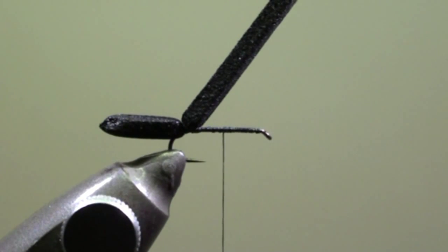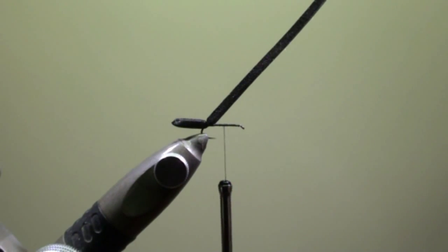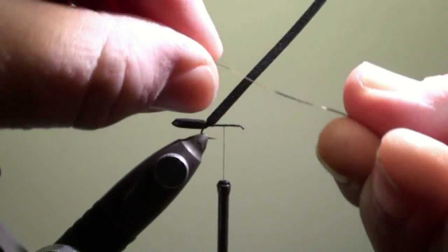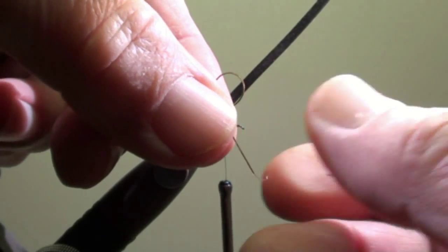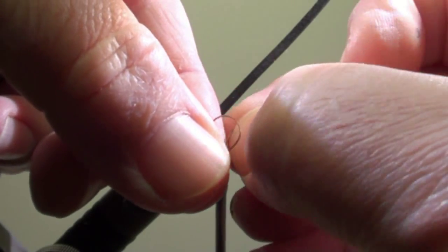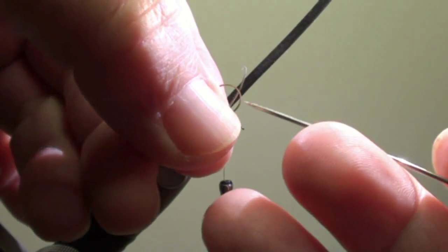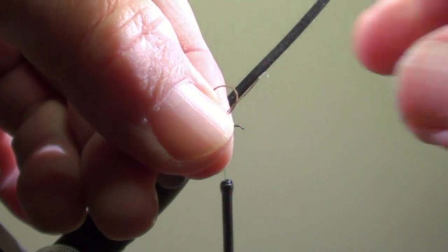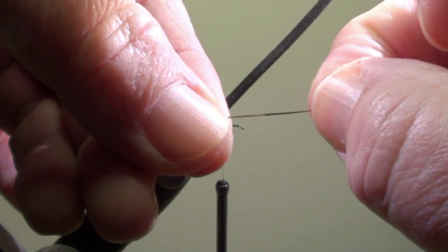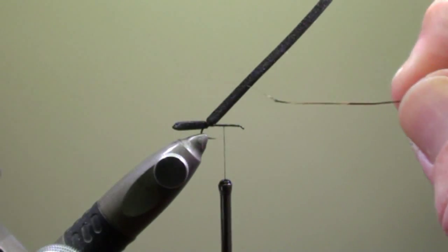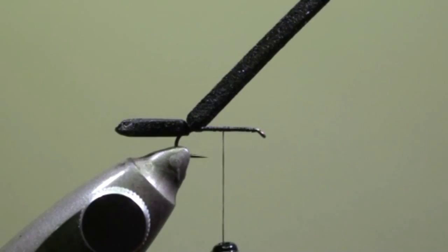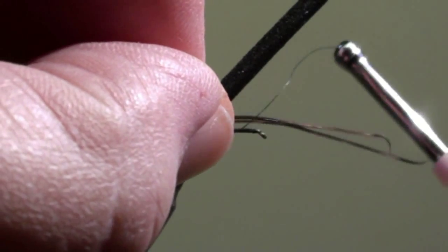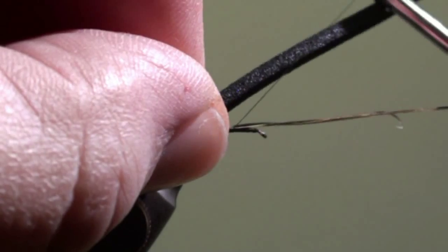At this point we will tie in the legs but first we will have to prepare them. Taking a pheasant tail fiber we will form a loop. Bring the back side beneath the loop and with the dubbing needle take it through the loop to form a knot. Then pull on both ends to close the knot. In this way we are going to prepare four legs. We will tie in, in the middle of the hook shank, two legs on each side of the hook shank.